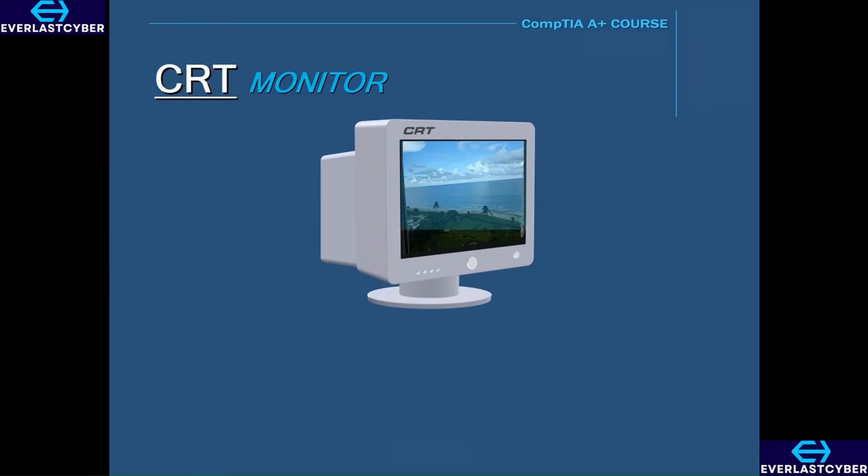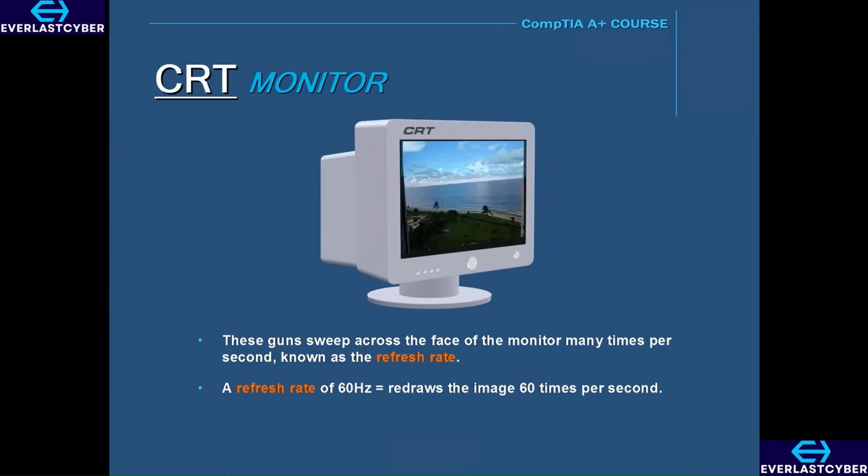It's constantly redrawing the image that we see on the screen. And this redrawing of the image is known as the refresh rate, which is measured in hertz. For instance, if the refresh rate is 60 hertz, then that means that the beams sweep across the entire face of the monitor, redrawing the image at the rate of 60 times per second.